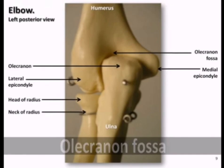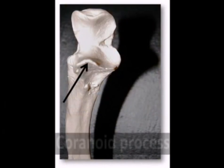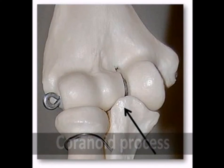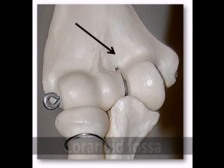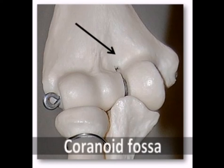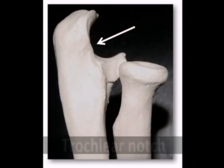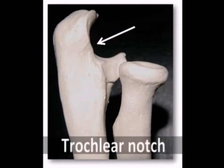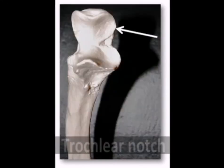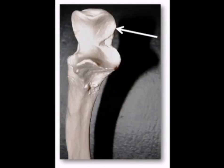On the anterior side of the ulna we find the coronoid process. This projection hooks into the coronoid fossa on the anterior distal humerus. The coronoid fossa is a much shallower depression compared to the olecranon fossa. The trochlear notch is the larger curved area shaped like the letter U, found between the olecranon and the coronoid process, and forms part of the elbow joint.